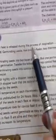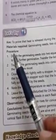Now, activity. Aim: to prove that heat is released during the process of respiration. Materials required: germinating seeds, two conical flasks, two thermometers, and one hole stopper. Procedure: Divide the germinating seeds into two equal portions. Boil one portion to stop further germination.